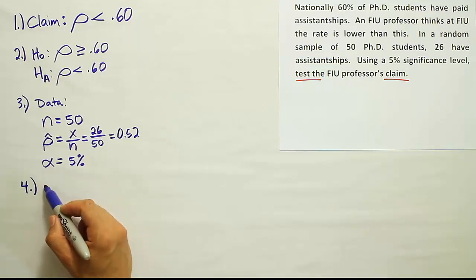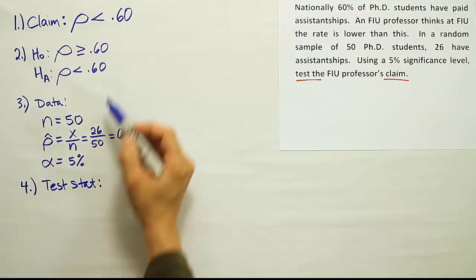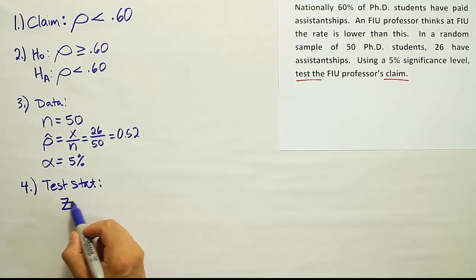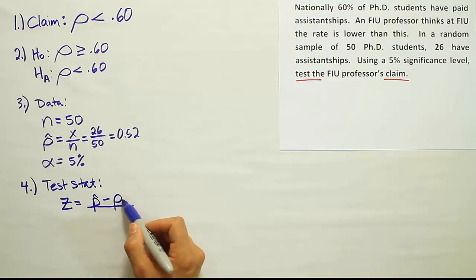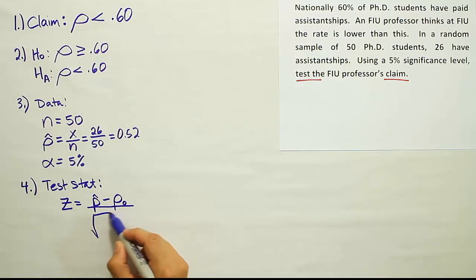In step four, we're going to go ahead and get our test stat formula. For hypothesis testing about the proportion, the test stat formula is Z equals P hat minus rho naught. Rho naught comes from H naught. And then divided by the square root of rho naught times Q naught, or the complement of rho naught, and then finally N.